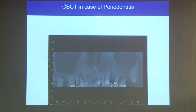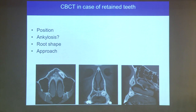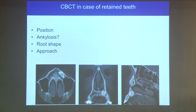If you see a bony septum, this can make your sinus floor elevation more challenging. In cases with periodontitis, you can clearly judge which tooth has a good prognosis or which should be extracted and replaced. In cases of retained teeth, you can judge whether ankylosis is present — not 100% in all cases, but the root shape can be visualized in more dimensions, giving an idea whether orthodontic treatment with the tooth makes sense and whether to approach surgically from the palatal or vestibular side.